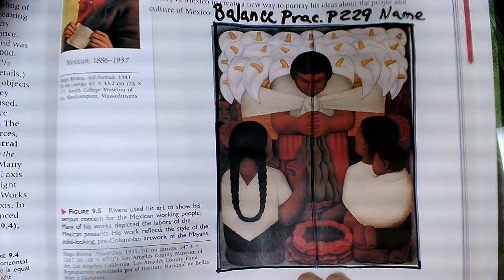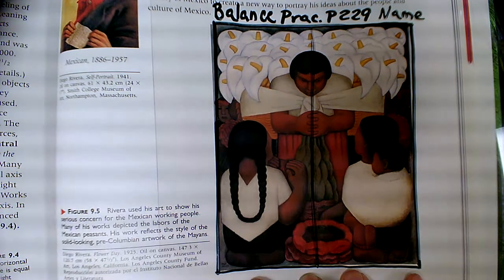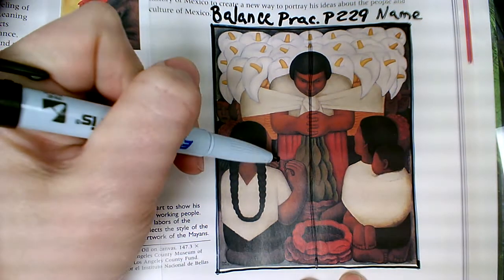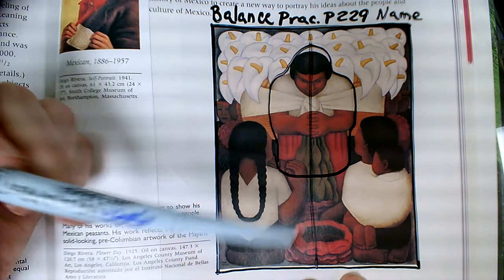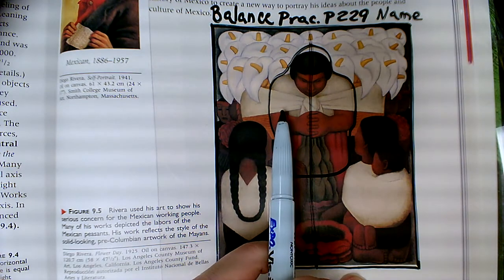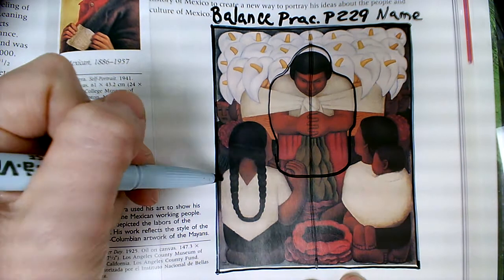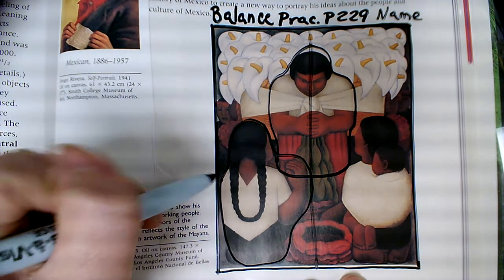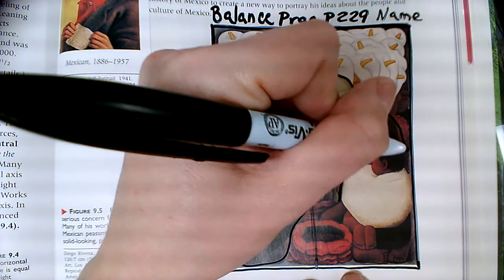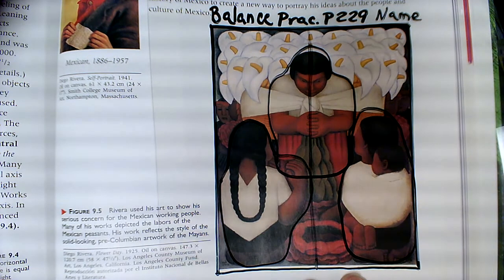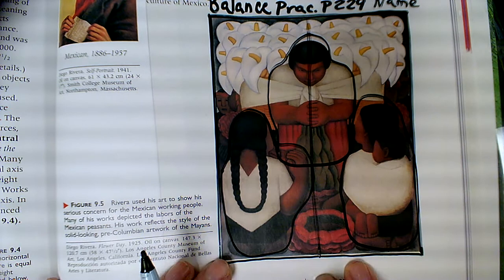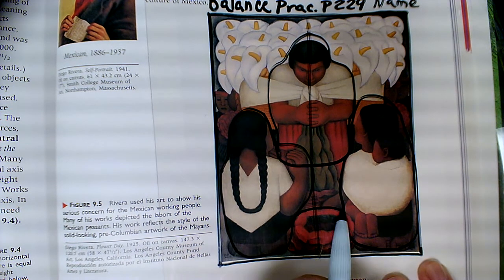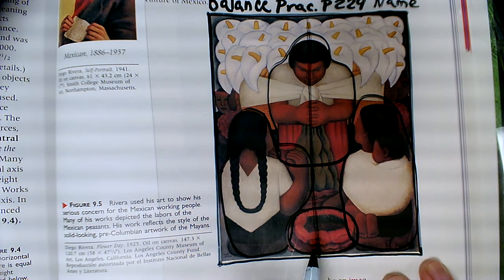Once you have that done, start circling the elements that create balance with one another across this symmetrically balanced artwork. The first thing I notice is this person centered in the middle of the composition — they land right along the line of symmetry, perfectly centered, so the right side of their body is balancing the left. Then there's the figure of a young girl on the left, balanced by the figure of a woman with a child on the right. They're not exactly the same but they're close enough and equally located to make a really nice symmetrical balance. At the bottom edge there's also a red shape that is nicely centered, creating balance within itself.